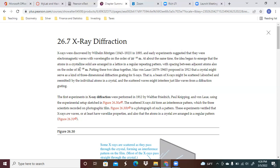And then the idea began to emerge that atoms in a crystalline solid are arranged in a lattice repeating patterns with spacing between adjacent atoms also on that order. So when you throw the two ideas together you've got a proposition in 1912 that a crystal might serve as a kind of three-dimensional diffraction grating for X-rays.